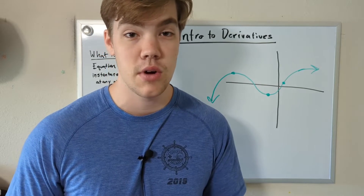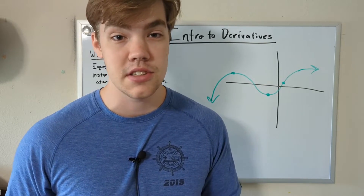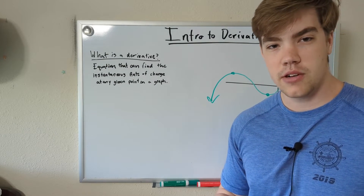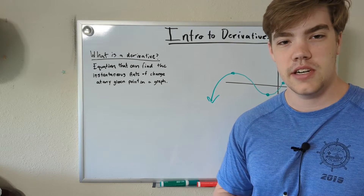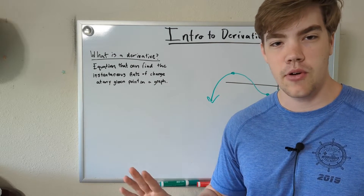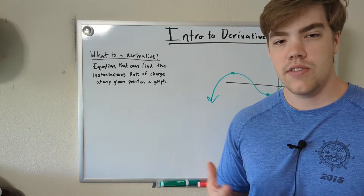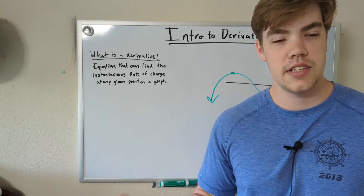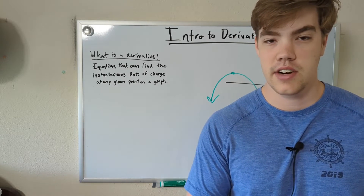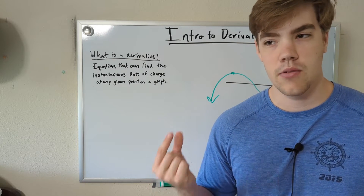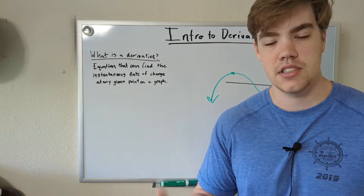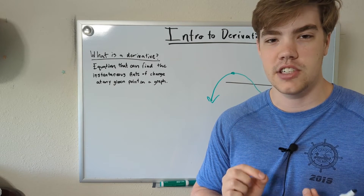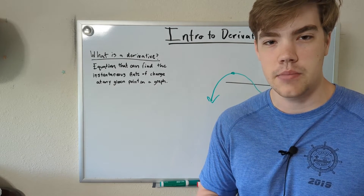First of all, let's define what a derivative is. A derivative is an equation that we can find from an original equation that gives us the instantaneous rate of change at any point along a graph. So if I were to have a graph and an equation for that graph, and I were to take the derivative, I could plug in whatever my point is to my new derived equation and find how that function changes at a given point.